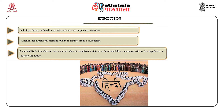Historian Eric Hobsbawm writes that nations, contrary to popular belief, are not as old as history. The modern sense of the word is no longer than the 18th century. He admits that what characteristics classify a group of human beings as a nation is difficult to answer. Nevertheless, he points out that attempts have been made to establish objective criteria for defining a nation based on a single criterion such as language or ethnicity, or a combination of criteria such as language, common territory, common history, cultural traits or whatever else. But all such objective definitions have failed because only some members of the large class of entities which fit such definitions can at any time be described as nations. Hobsbawm also shows that the criteria used for this purpose — language, ethnicity or whatever — are themselves fuzzy, shifting and ambiguous.